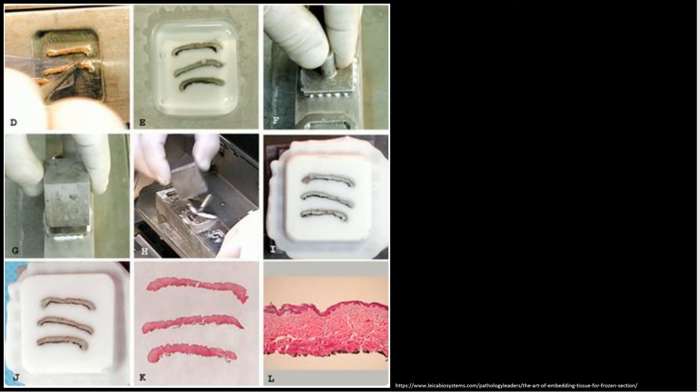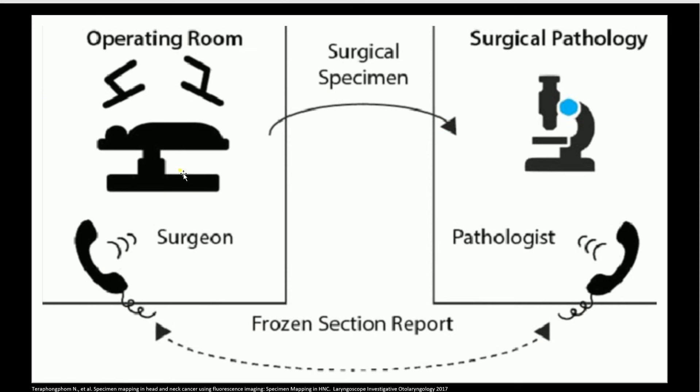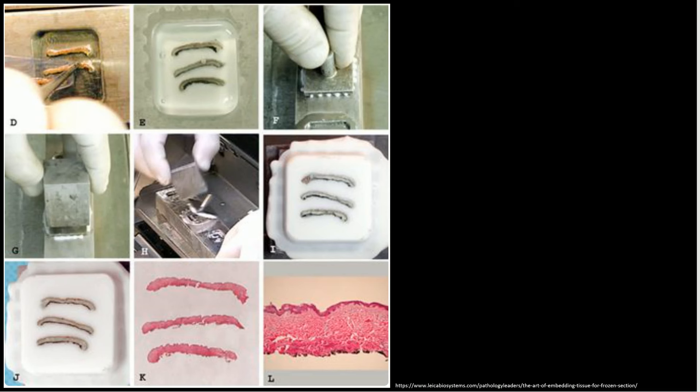This process helps us to quickly evaluate the tissue so that we can get an answer back to the surgeon while the patient is still on the table. Because while we're doing all of this, the patient is still on the table — still under general anesthesia — and the surgeon still has them open. So we want to do this as quickly as possible, and this is one of the ways that we do it.